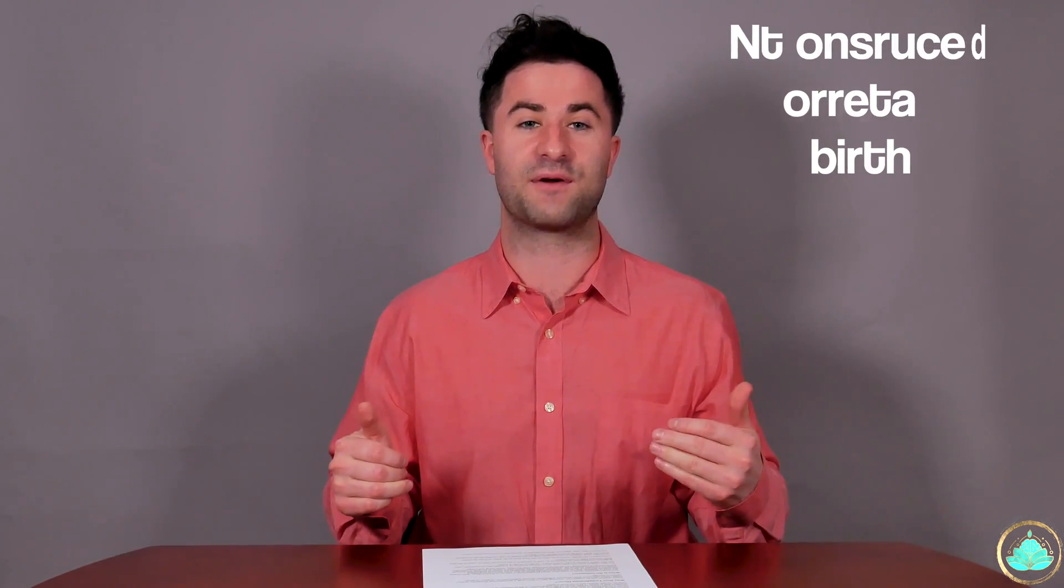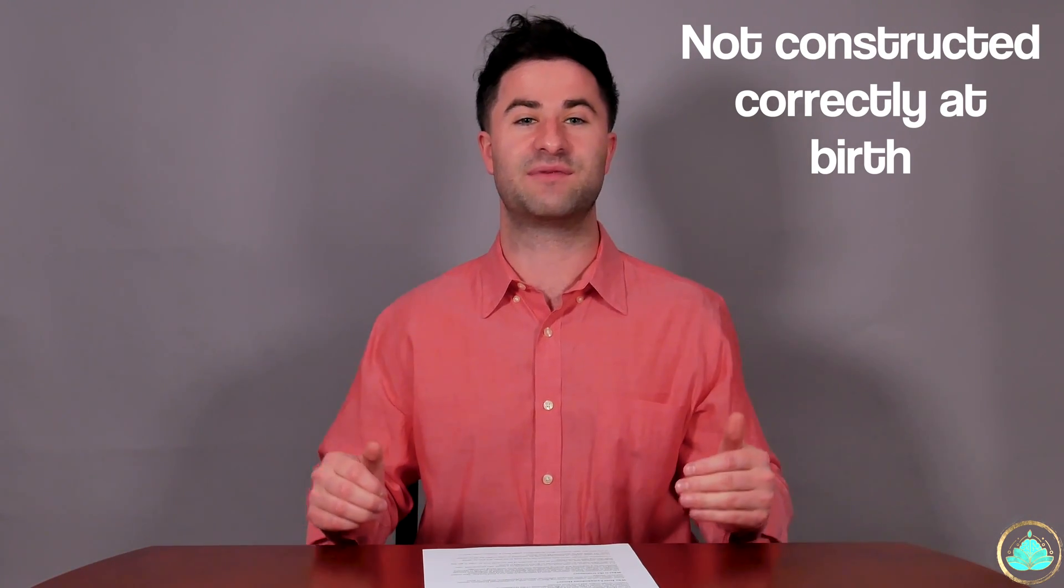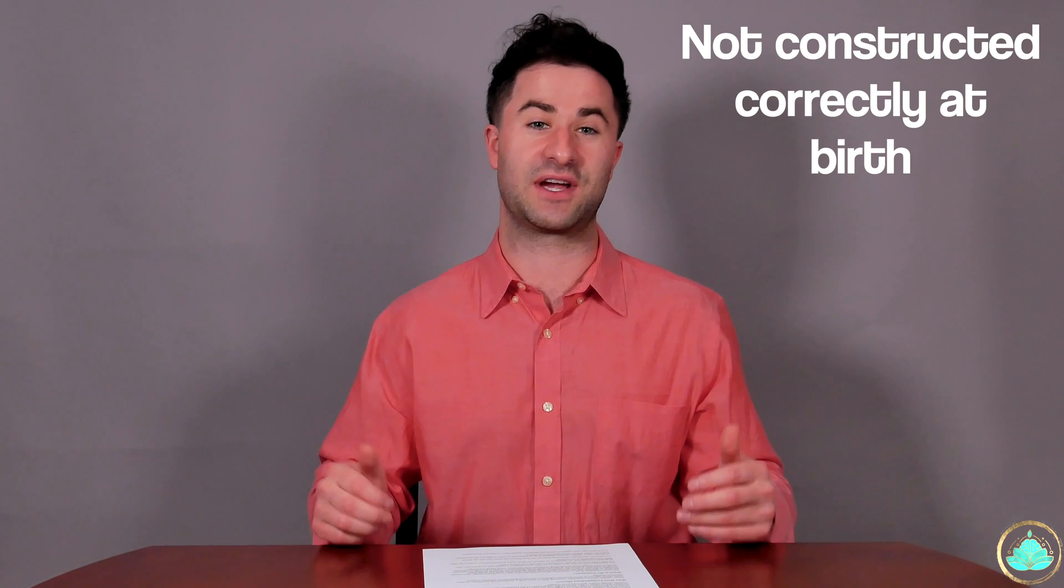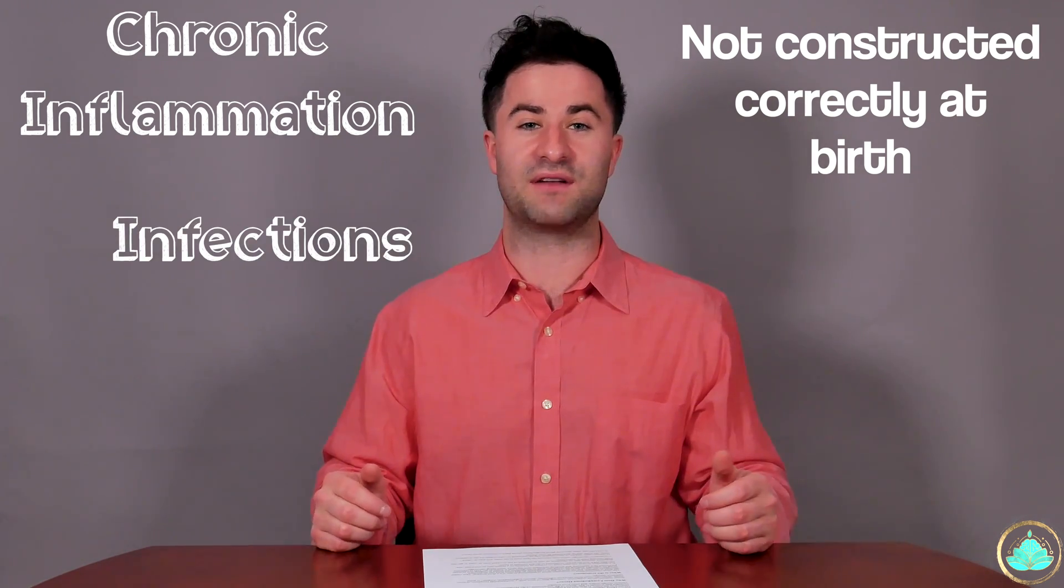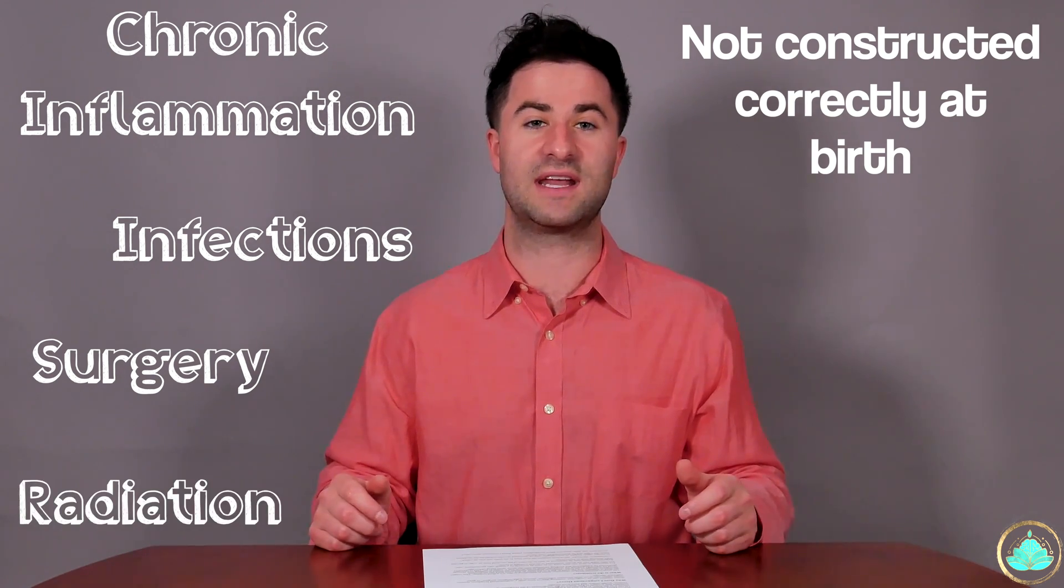So why does lymphedema actually occur in the first place? Well, some reasons are congenital, meaning that they're misshaped or misformed at birth. While in other instances, lymphedema can occur due to things like chronic inflammation, recurrent infections, surgery, or even previous radiation therapy.